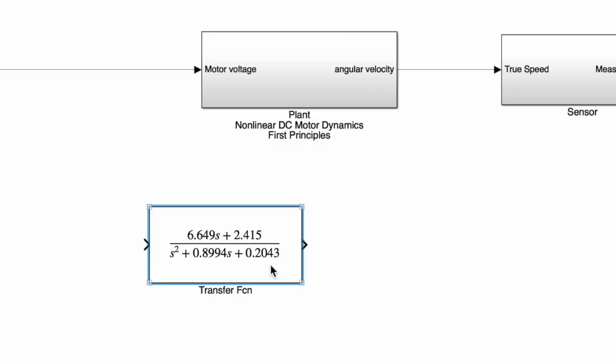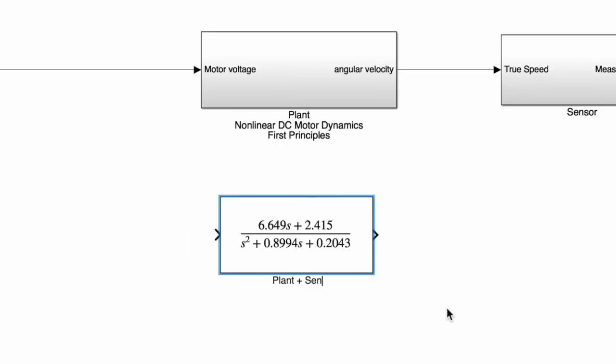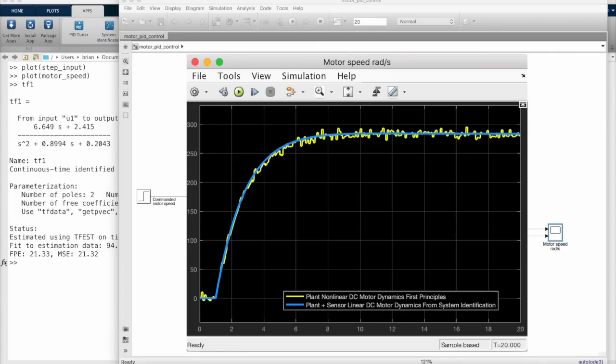You could use the LTI block and just assign it to TF1 directly, but I like writing it out explicitly in video so that you can see the transfer function clearly in the block mask. As a reminder, this block represents a linear model of both the DC motor plant and the sensor. And we got this model using only an input and response signal from our system.